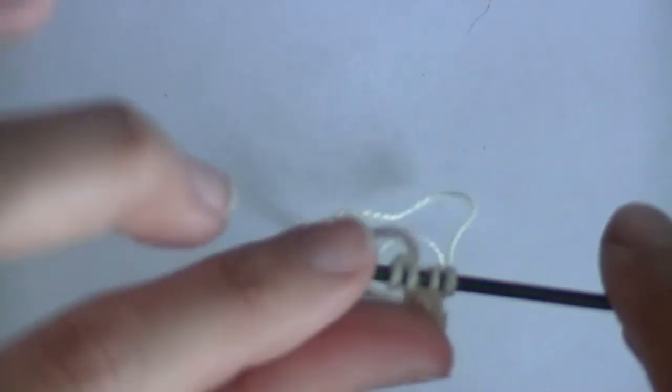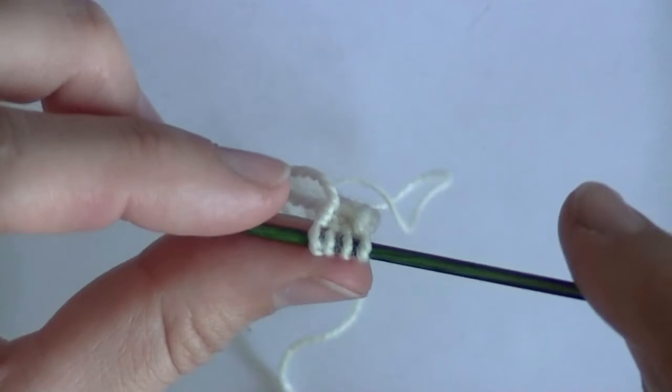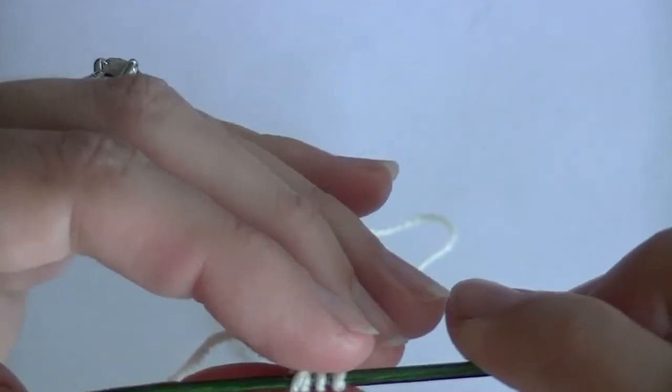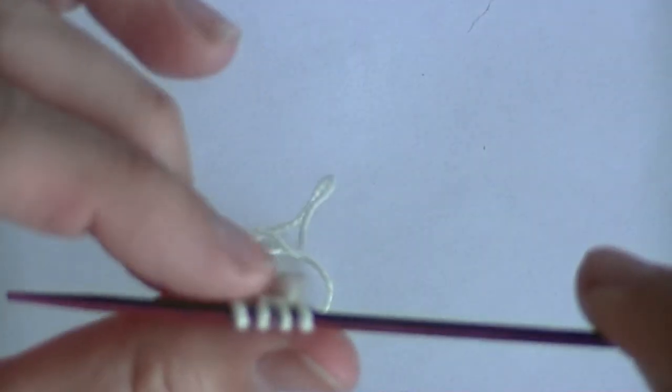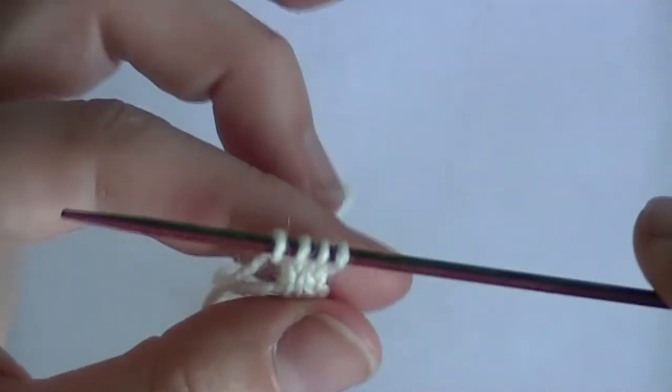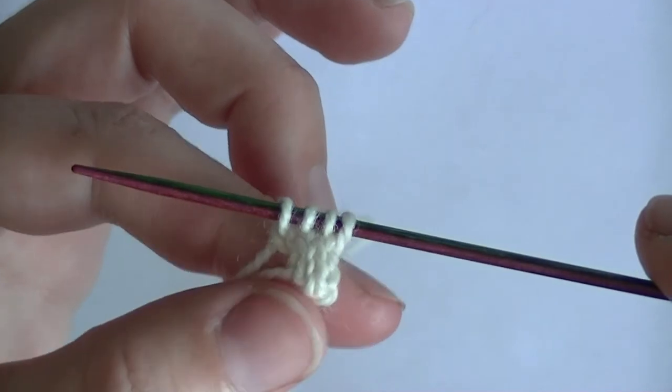So that's why you want just kind of that nice just a little bit of tug there when you go ahead and knit your next row. And that's how you knit an I-Cord.